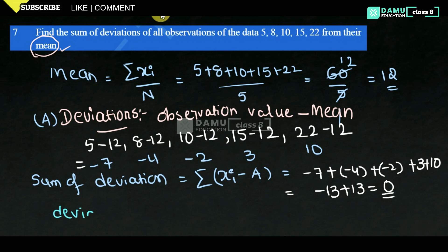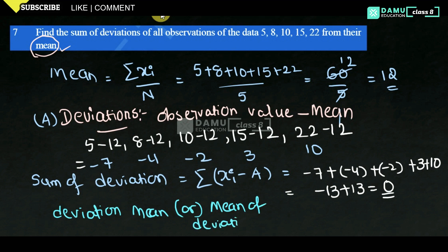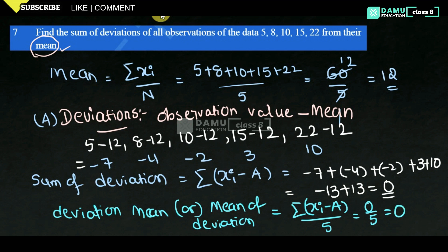Mean of deviations: the mean of deviations will be summation of deviated values xi minus A, divided by number of observations. That is 0 by 5, which equals 0. So the deviation mean is also 0.